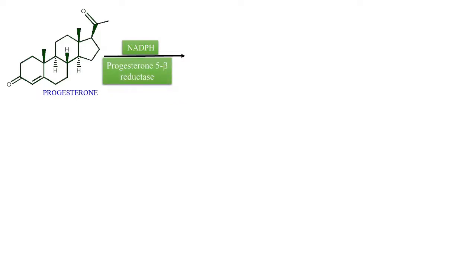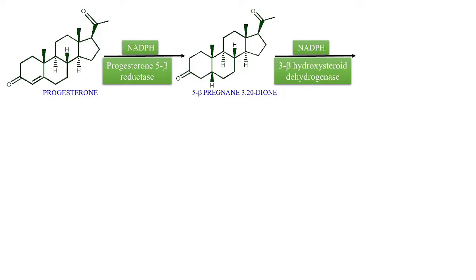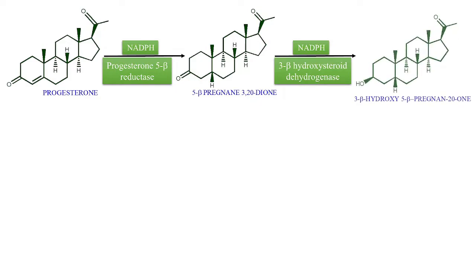From progesterone, in the presence of NADPH and the enzyme progesterone 5-beta reductase, there is reduction of the double bond at position 4 and 5. It is written 5-beta because the hydrogen at position 5 has a beta configuration — beta configuration meaning this hydrogen is in front of the plane.